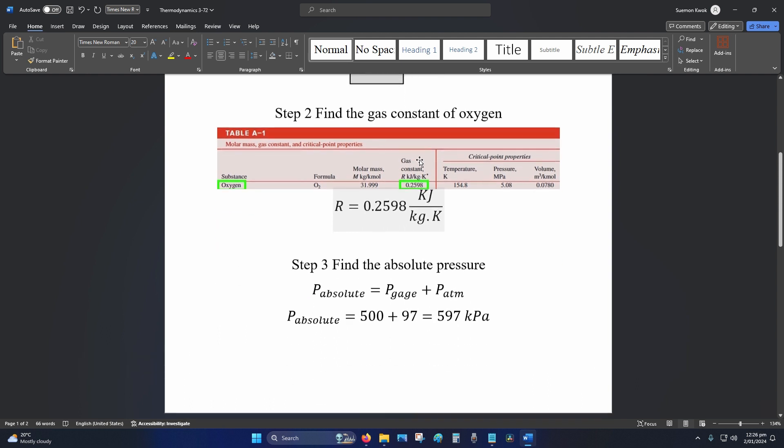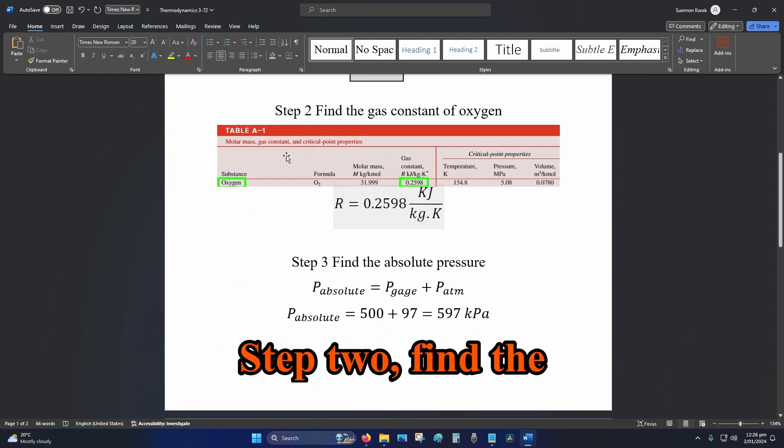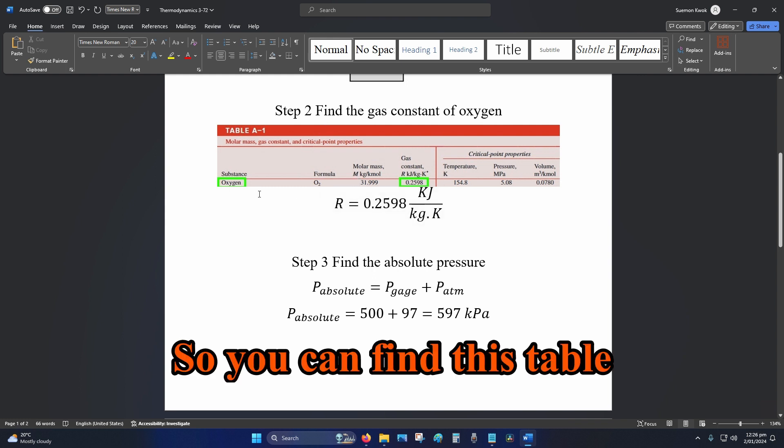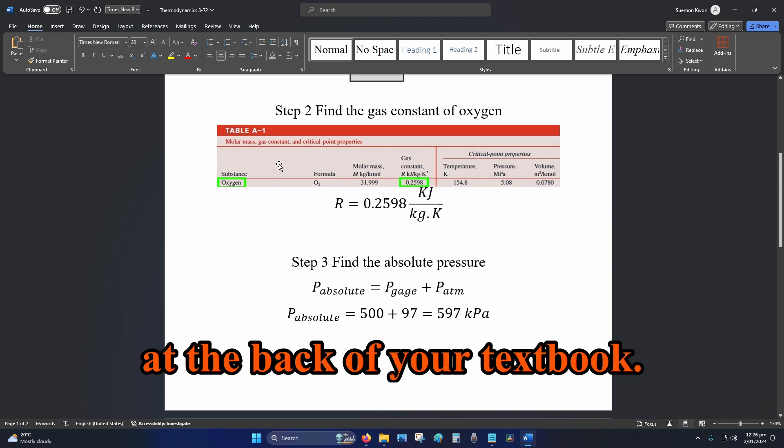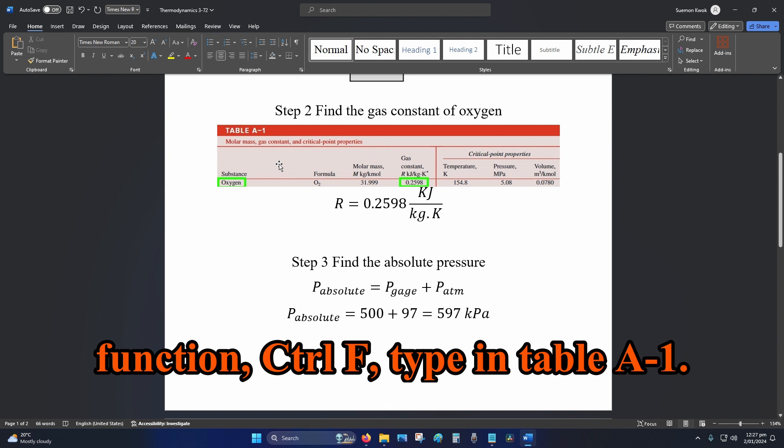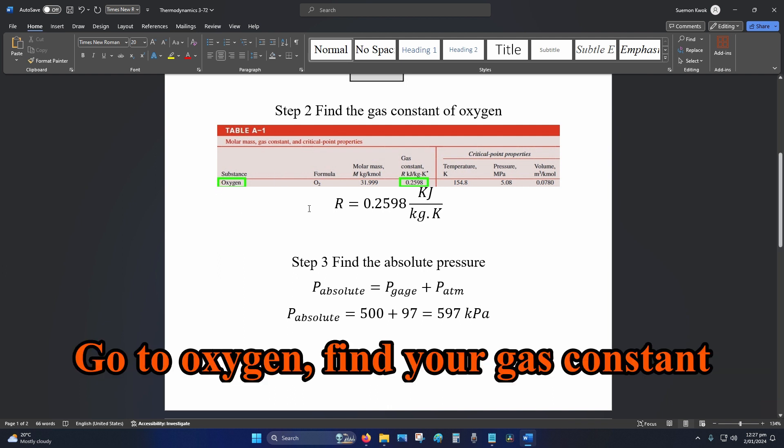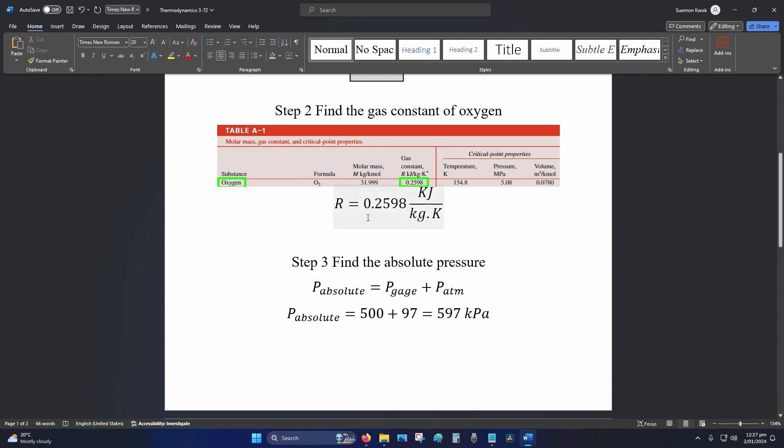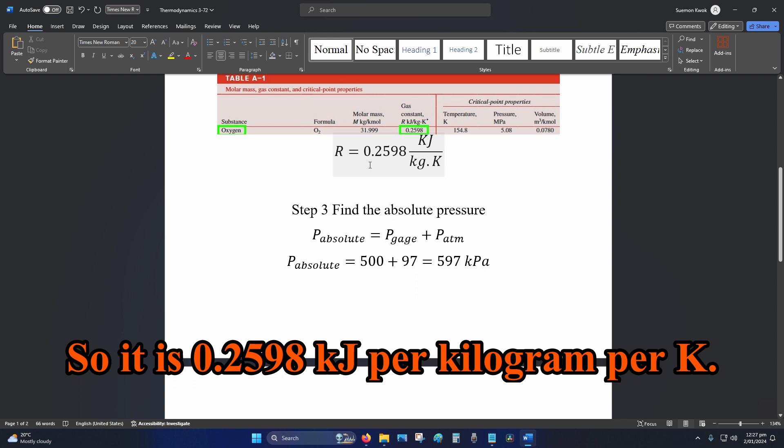Step 2: Find the gas constant of oxygen. You can find this table at the back of your textbook. If you bought the PDF, use your search function, Ctrl+F, type in Table A-1, go to oxygen, find your gas constant value, which is your R. So it is 0.2598 kilojoules per kilogram per K.